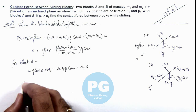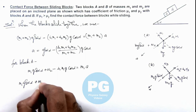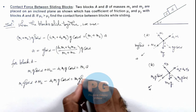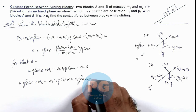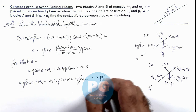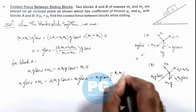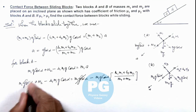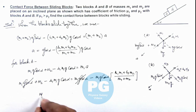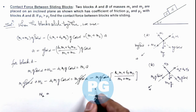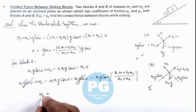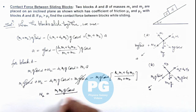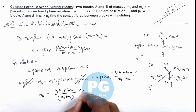After substitution: m1*g sin(alpha) + N2 - mu1*m1*g cos(alpha) = m1*g sin(alpha) - m1*g cos(alpha) times [(mu1*m1 + mu2*m2)/(m1 + m2)]. The m1*g sin(alpha) terms cancel out, and on simplifying, the contact force N2 between the blocks is: N2 = [m1*m2*g cos(alpha) / (m1 + m2)] times (mu1 - mu2). This is the final result.